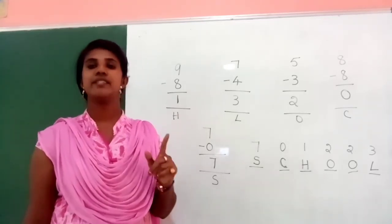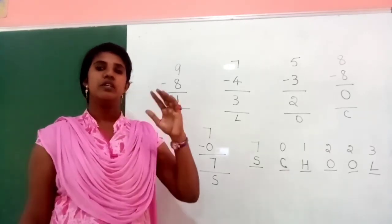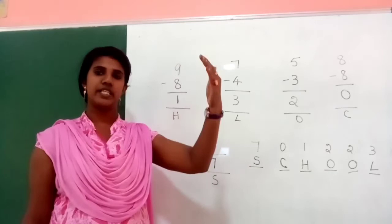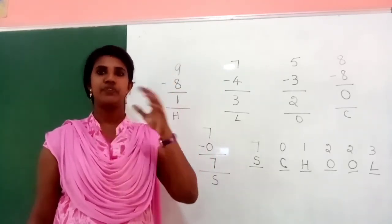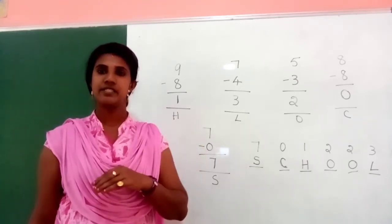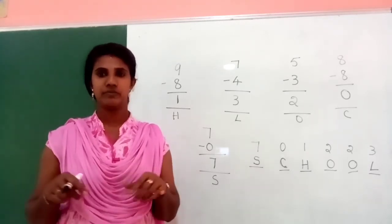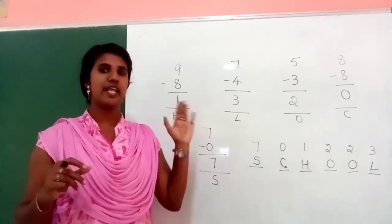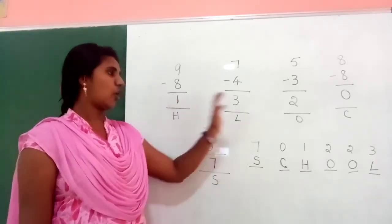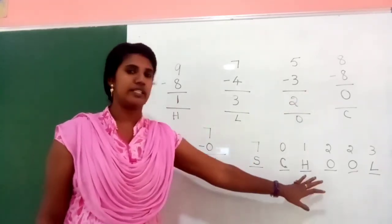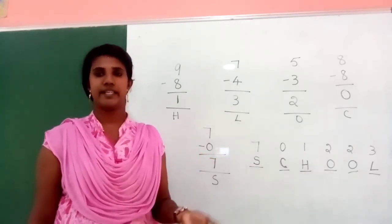Now open your book to page number 52. There are different ways of subtraction — vertical subtraction and horizontal subtraction — with sums to fill in. Complete those. And on the next page, page 53, there are some questions; copy the answers and fill them in. Practice again and again.